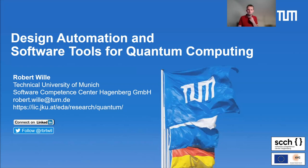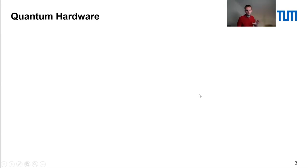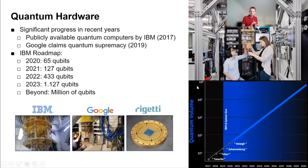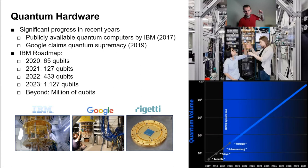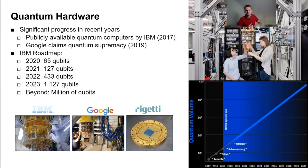I want to focus particularly on what the tasks of design automation experts or software developers are in this domain. Looking quickly at how hardware is evolving — this slide is a bit outdated but serves as a proxy to argue that there is a tremendous improvement in hardware. It is not entirely clear whether developments in quantum computing hardware are comparable to Moore's law, but roadmaps from vendors like IBM, Google, and startups show quantum hardware getting more mature, complex, and scalable.